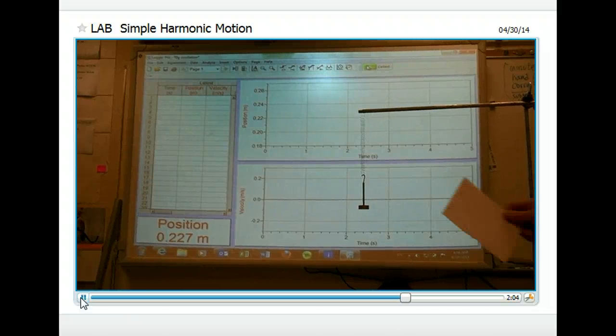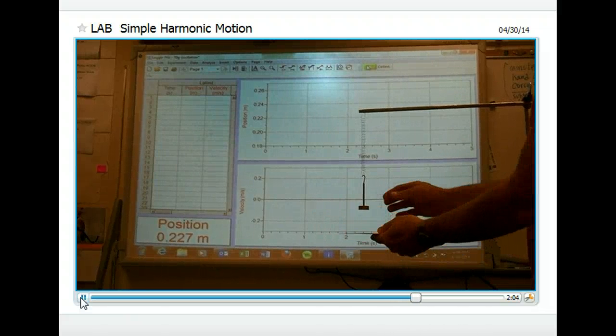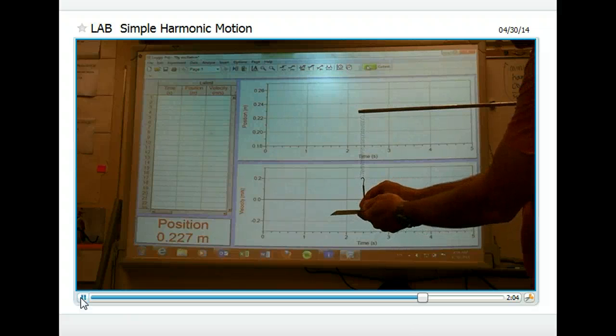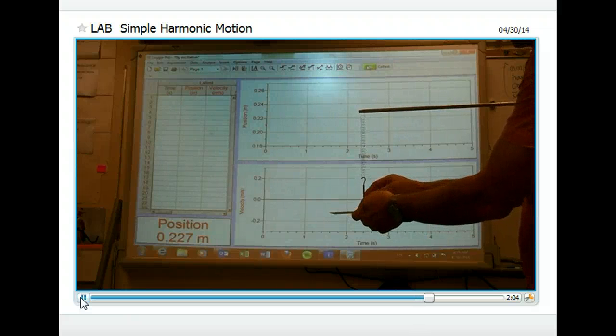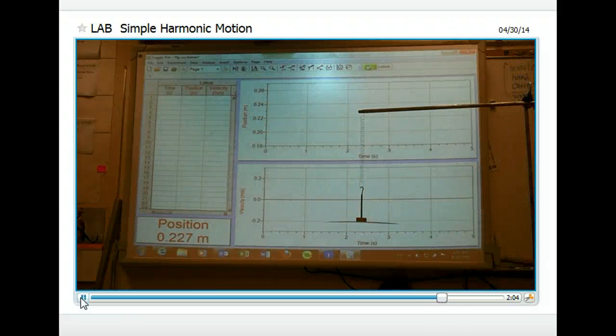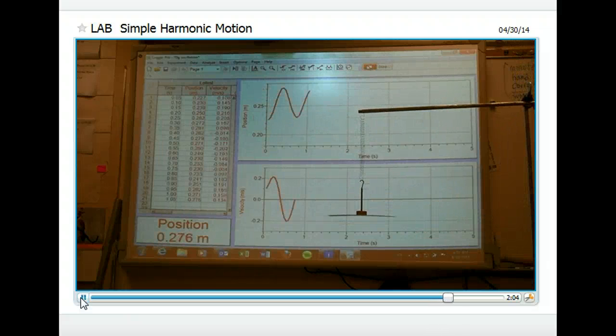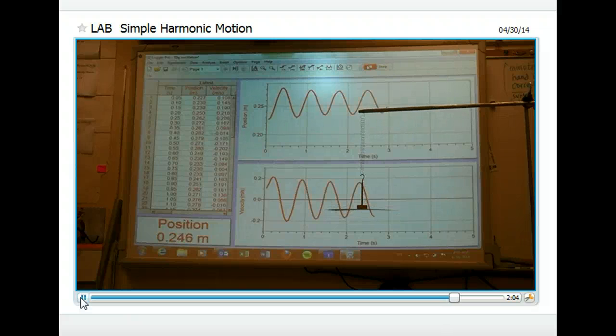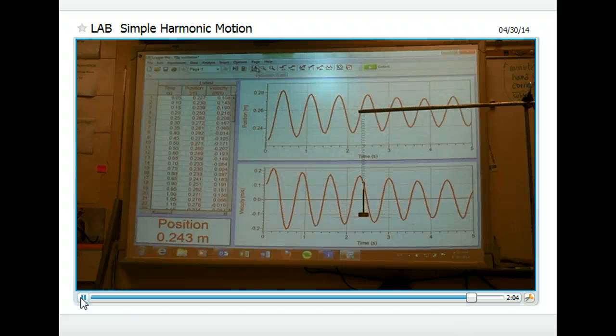Next, we're going to look at damped oscillation. I'm going to take an index card, attach it to the bottom of the mass, and that will help to slow it down due to air resistance. You can see from the graph the effect it had on the amplitude of the wave as time went on.